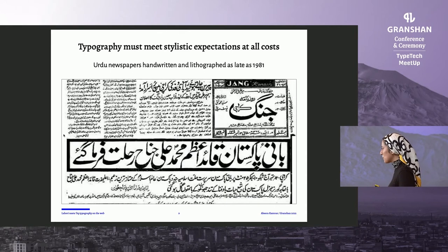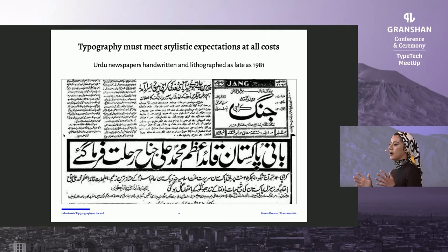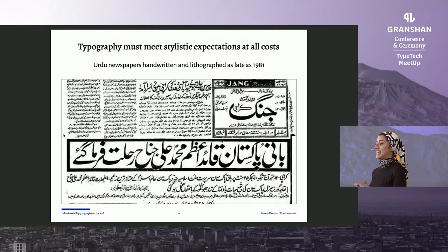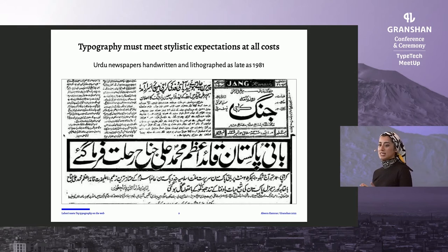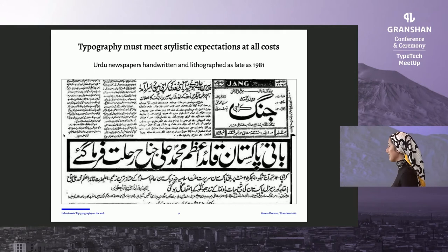Because Urdu has such an ideologically charged relationship with Nastaliq, Urdu readers have very fixed stylistic expectations. Famously, Urdu newspapers were handwritten and lithographed as late as 1981, simply because Urdu readers did not feel any Nastaliq typeface adequately represented the stylistic expectations they had for their typography. So loads of scribes would just sit in a room writing newspapers daily — and that was just life.